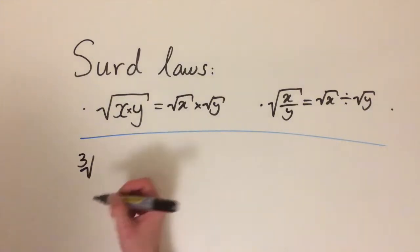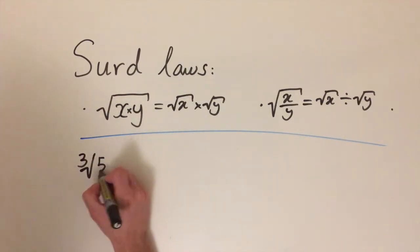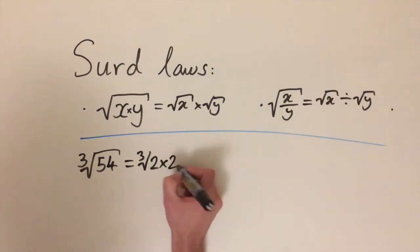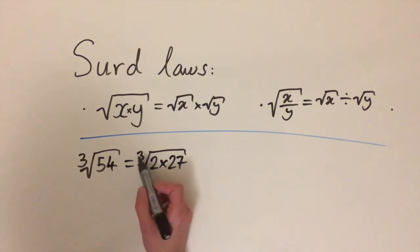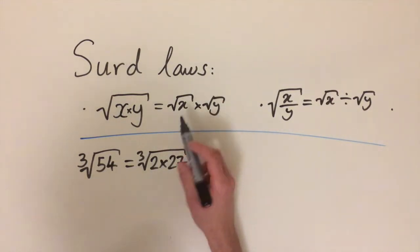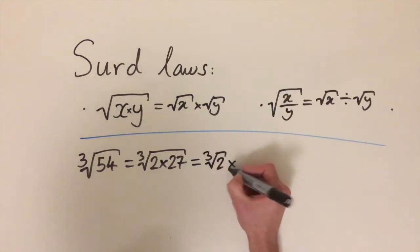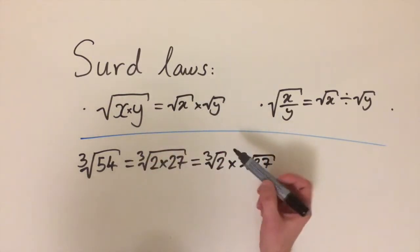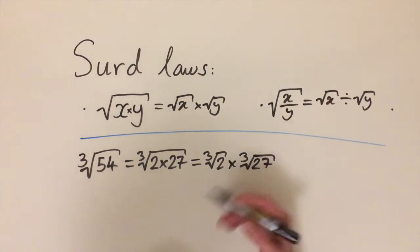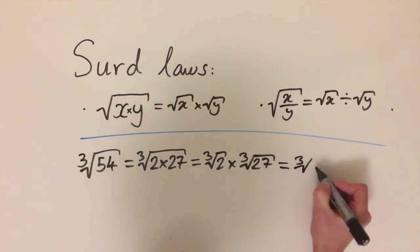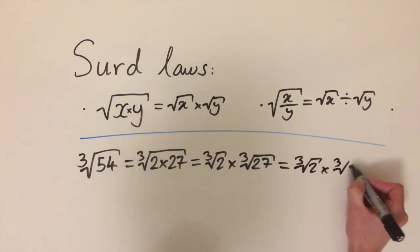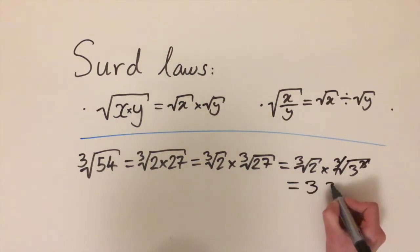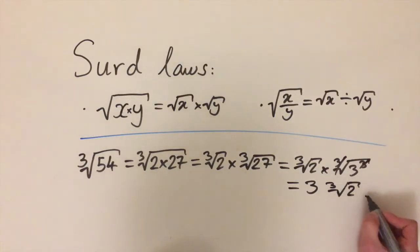Instead of square roots, let's now look at cube roots. The surd laws still apply for any nth root. Let's look at the cube root of 54. We can factorize this as the cube root of 2 times 27, and 27 is a cube number — that's what we're looking for this time. Using the law of multiplication, this is the cube root of 2 times the cube root of 27. It's important that the roots stay of the same type — you can't mix a square root and a cube root; they must both be the same kind.